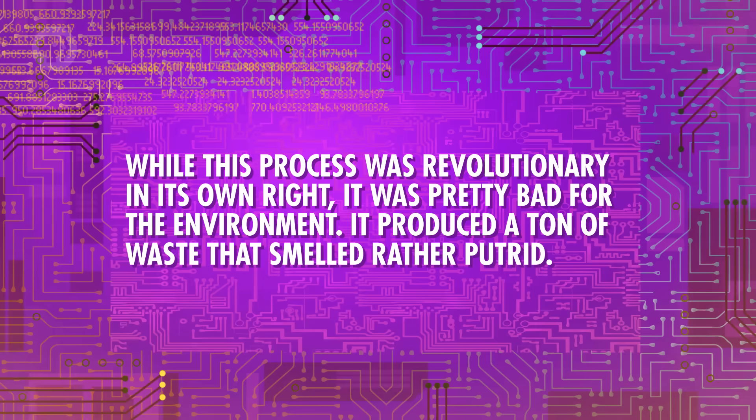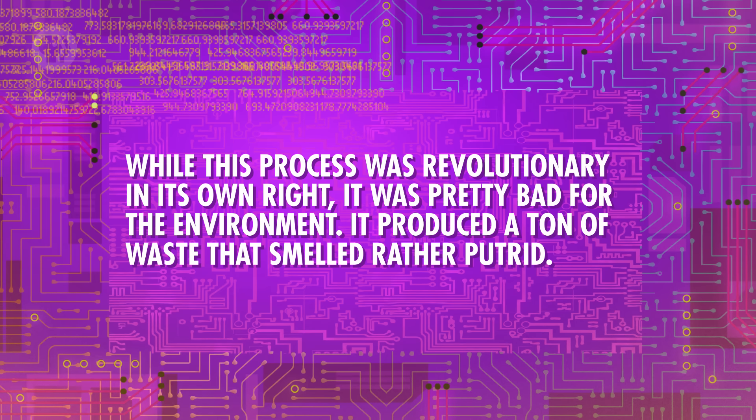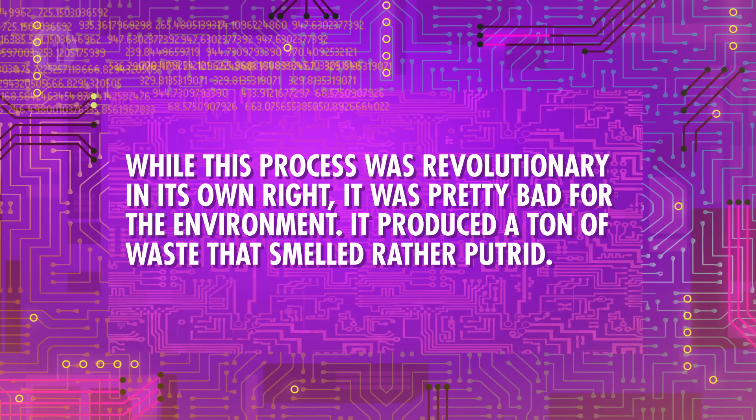Leblanc's process became the forerunner of modern chemical manufacturing and paved the way for future chemical engineers. By 1791, he opened up a small factory in Saint-Denis and began large-scale production of soda ash. But his plant was soon taken over by revolutionaries during the French Revolution, who also released his trade secrets. While this process was revolutionary in its own right, it was pretty bad for the environment — it produced a ton of waste that smelled rather putrid. Since chemical processes can have nasty byproducts, governments can often pass pollution legislation, especially around big cities and bodies of water. But none of this has stopped the chemical industry from growing.